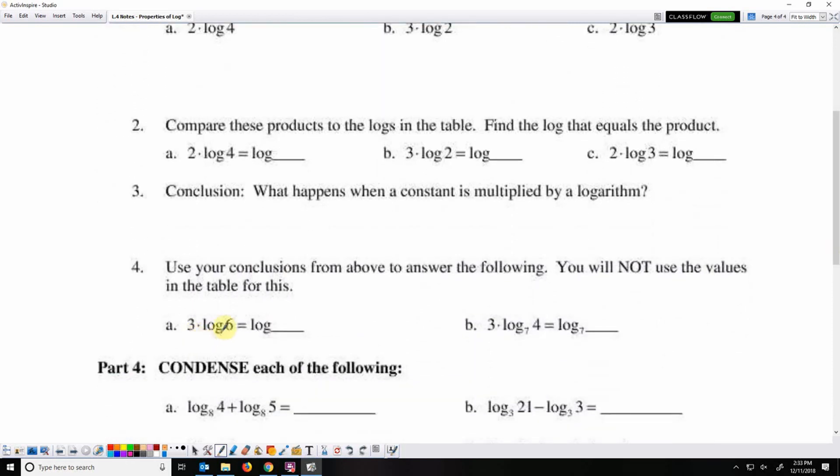3 times log 6 is the same as log 6 to the third power, which could be simplified as 6 times 6 times 6. And then 3 times log base 7 of 4 is the same as log base 7 of 4 to the third power. We can always just move that coefficient to the back as an exponent on the argument.